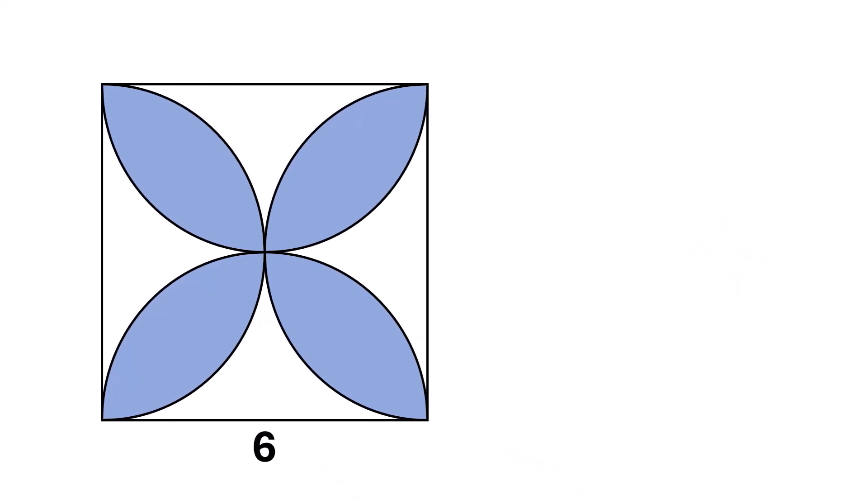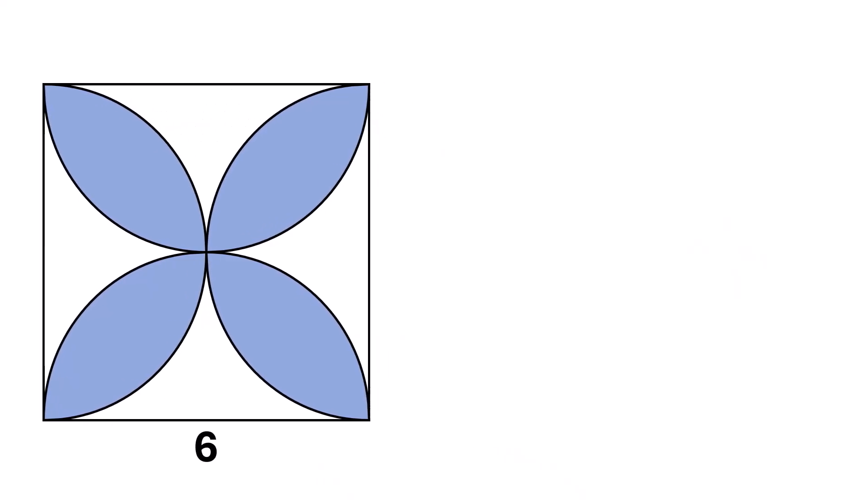Let's walk through the solution together. First, let's find the area of the square. Since the side length is 6 units, the area is 6 squared, which is 36 square units.